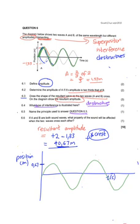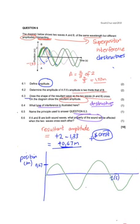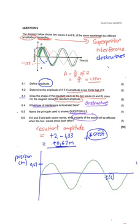If A and B are both sound waves, what property of sound will be affected when the two waves cross each other? Remember, so we can see that when we have the, what changes when they cross each other? And we can see that when they cross each other, we said that the resultant amplitude changes. And the property of sound that is linked to amplitude is loudness. So the loudness would be affected. Remember that the greater the amplitude, the greater the loudness of the sound.